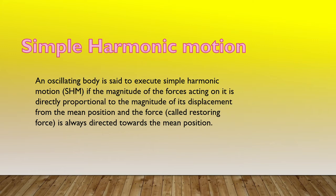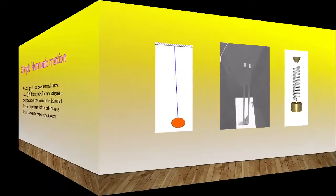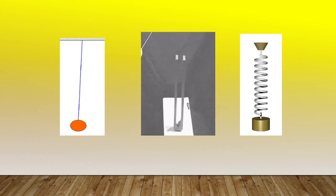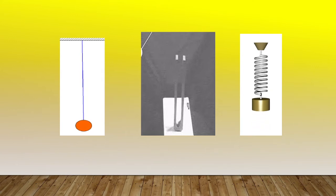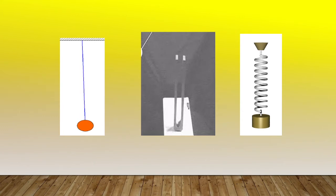To understand simple harmonic motion, let us see some examples. We can see that simple harmonic motion is actually a special case of oscillatory motion or vibratory motion.